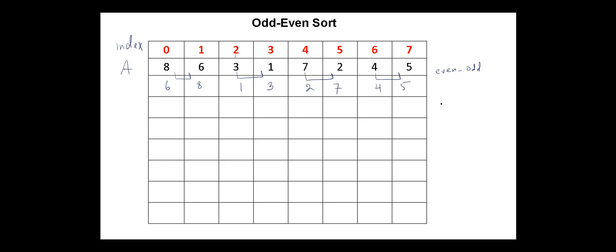The next iteration, we start with odd-even pair. So we compare this pair, we have to swap it. Next this pair, two, three. Next these two elements, four, seven.